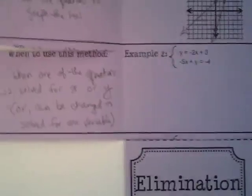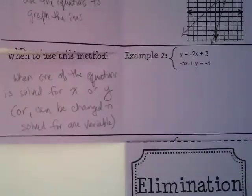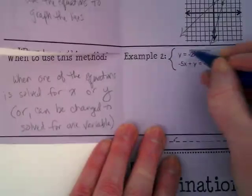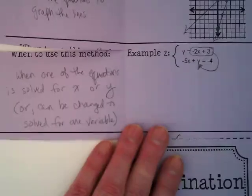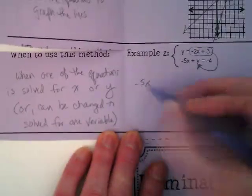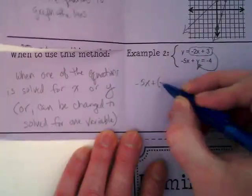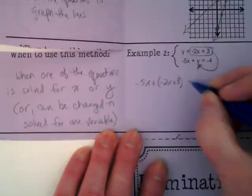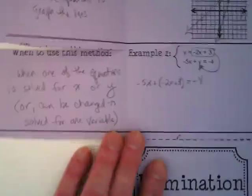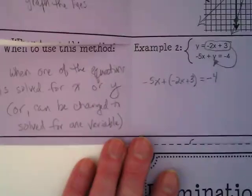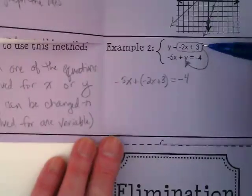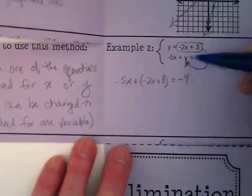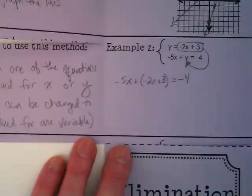When I think about this method, when I look at the example that's here, do you see the first equation is solved for y and the second one is not, it's in standard form. We would take this and we're going to plug it in for y here. So let's rewrite this as negative 5x plus negative 2x plus 3 is equal to negative 4. So substitution is when we're taking one of the equations that's solved for just one variable and we're taking that and putting it into the other equation for that variable. We're substituting it in.